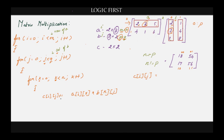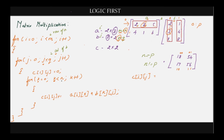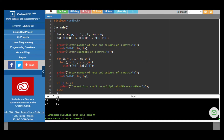You have to make sure that C[i][j] is initialized to zero every time before the innermost loop. Instead of N you can also use P, since N equals P. I will leave the link for the complete program in the description box below. Thank you for listening.